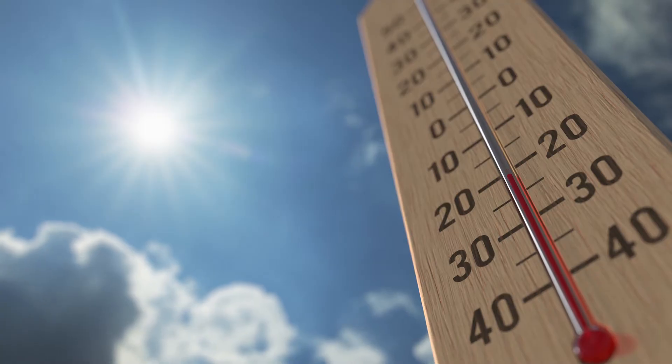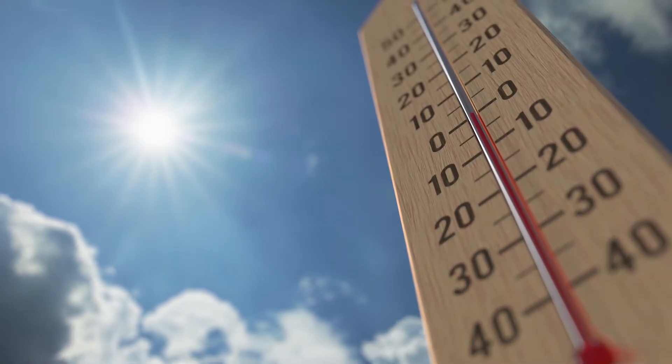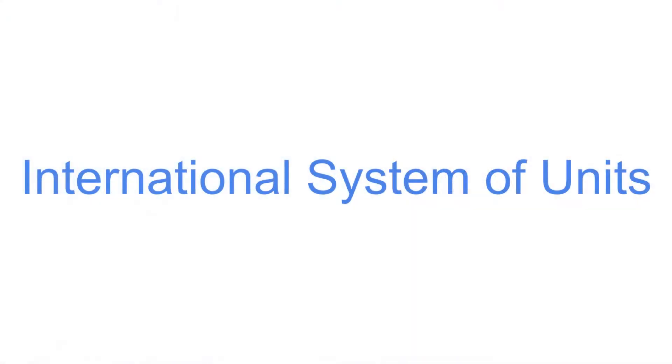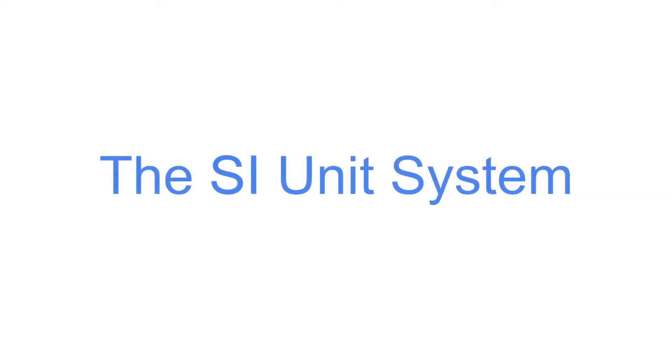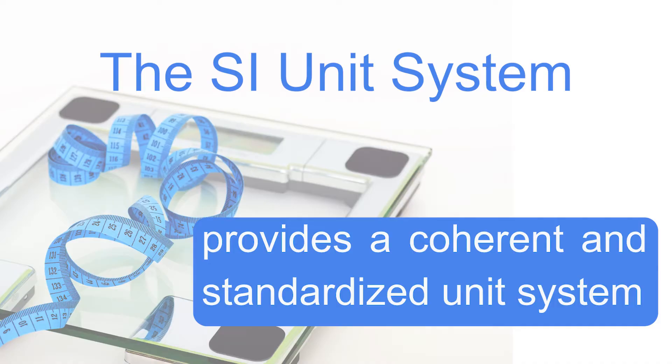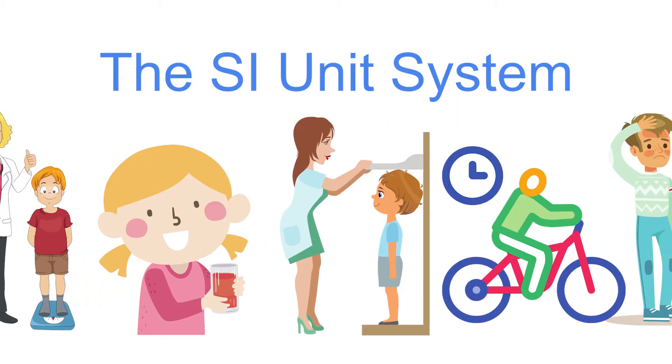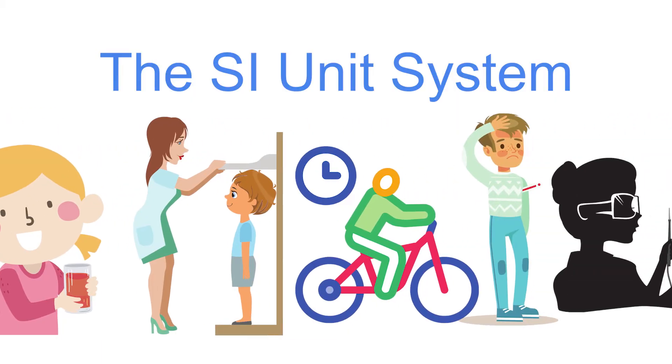Measuring is another skill which involves ascertaining a property of a material and expressing it in a defined unit. Measurements are expressed in standard units. In 1960, the International System of Units, abbreviated as SI, has been adopted and is continuously being used with the purpose of providing a coherent and standardized unit system. In our daily lives, we use SI units to describe common physical quantities.